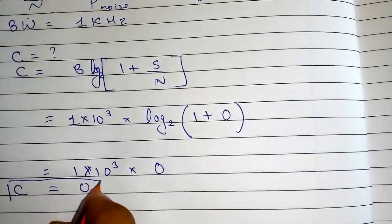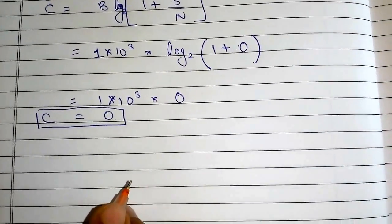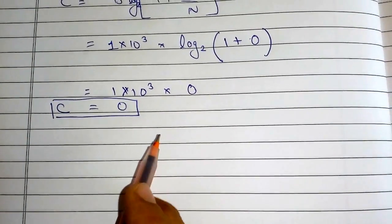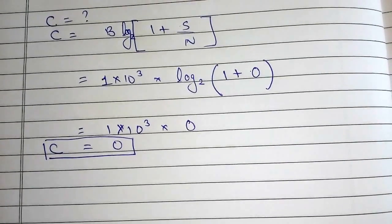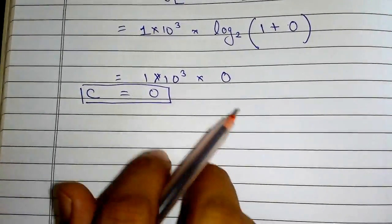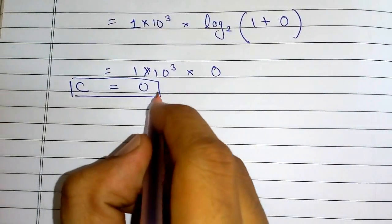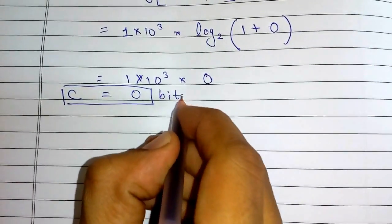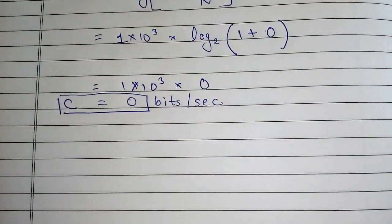So my channel capacity is finally 0. This answer makes sense: if my channel is extremely noisy, there is no way that I can put any data into it. That is why this answer is factually correct. The unit of channel capacity is bits per second. Let's solve another question.